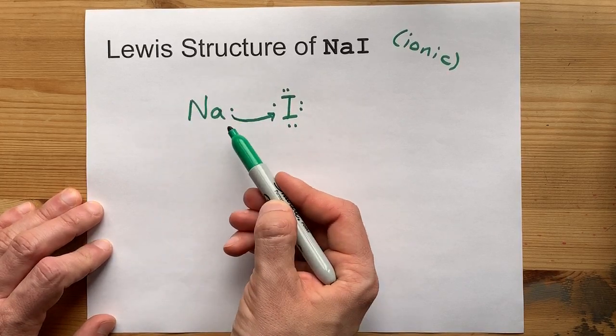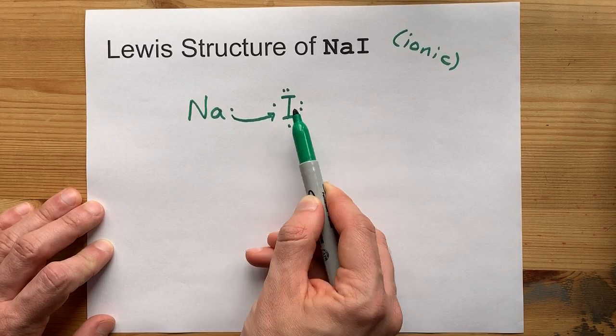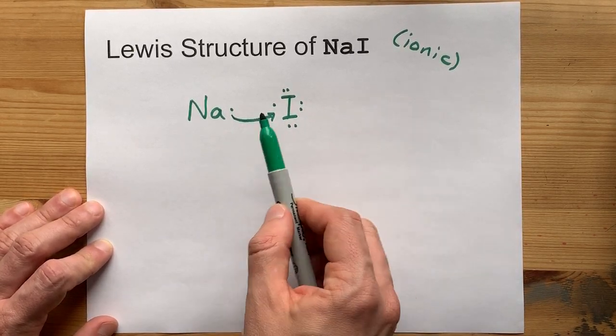Sodium will be left with no valence electrons. That makes it stable. And iodine will have a full eight. That is also stable by the octet rule. This is perfect.